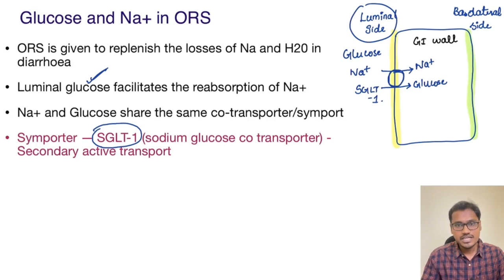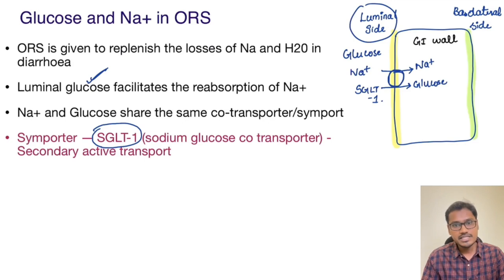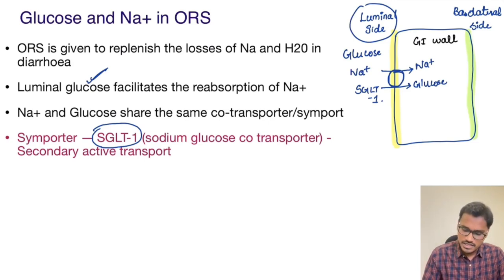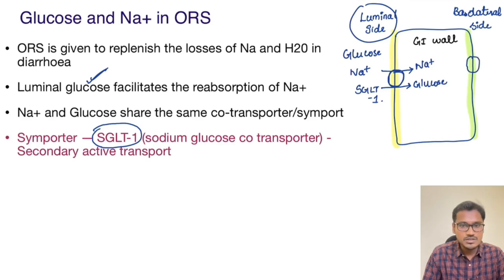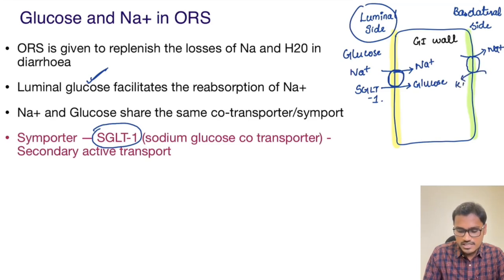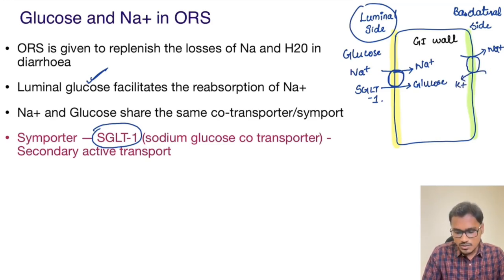SGLT-1 is a form of secondary active transport. In general physiology we discuss about secondary active transport — it means it is going to derive energy from some other transporter. It drives its energy from the basolateral transporter, that is our sodium-potassium ATPase transporter.